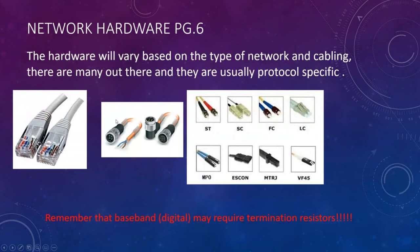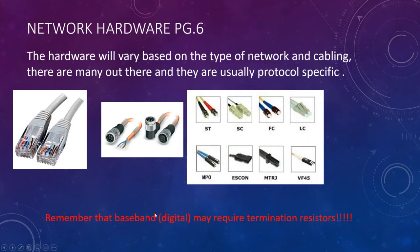Moving to network hardware, still in the physical layer. Hardware varies based on the type of network and cabling requirements. We've talked about RS-232 connectors, 26-pin and 9-pin connectors. When talking about Ethernet connectors, we're mostly talking about RJ-45 type connectors or specialized industrial connectors. Remember, baseband digital transmission mediums may require termination resistors — all of them except HART fall under that.